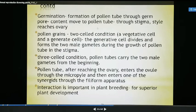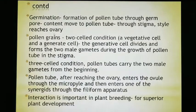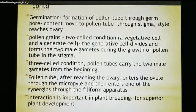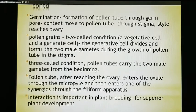So the germ pore reaches the ovaries. Next, pollen grains exist in a two-celled condition — a vegetative cell and a generative cell are present. The vegetative cell and generative cell form, and then the generative cells divide to form two male gametes, which we have discussed earlier.